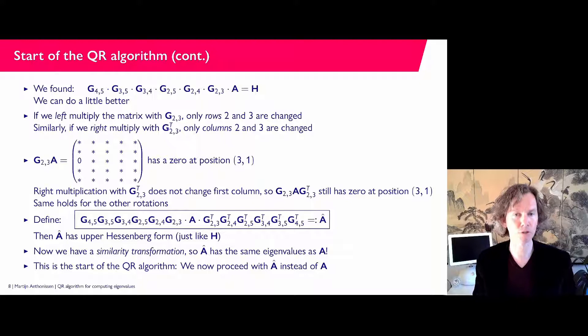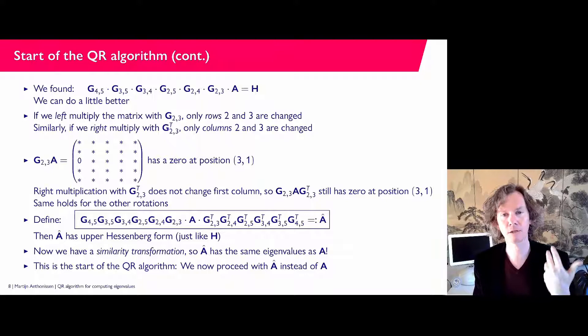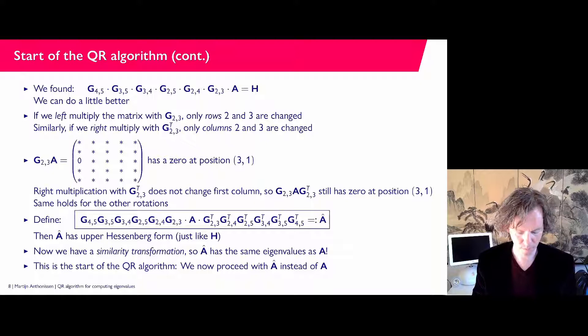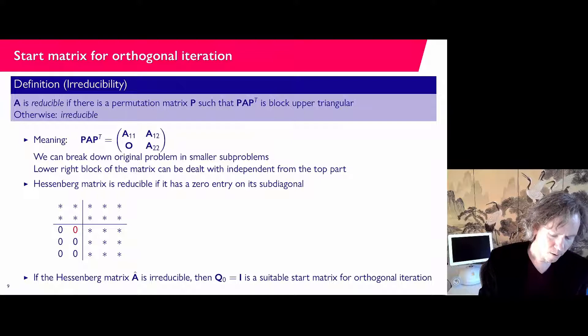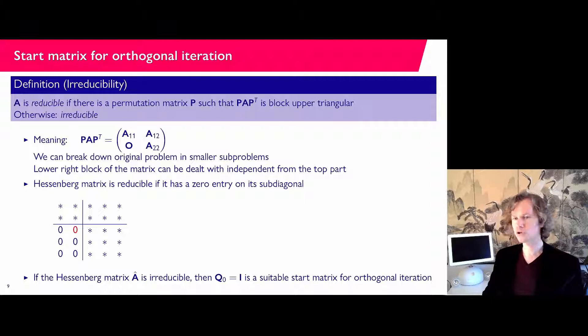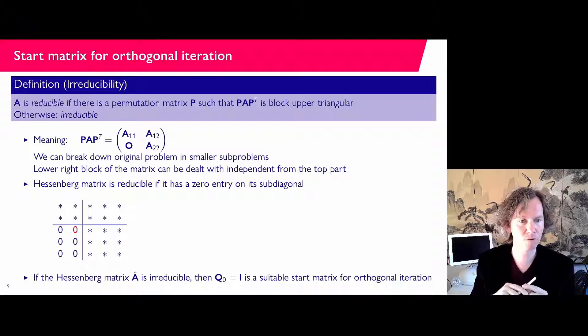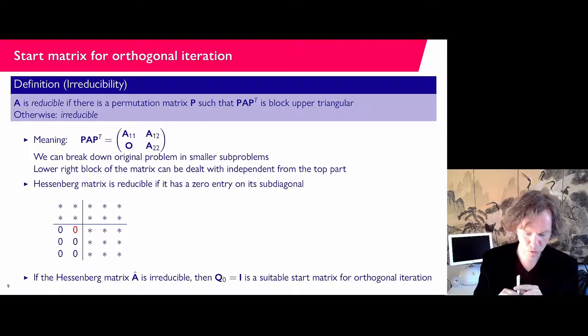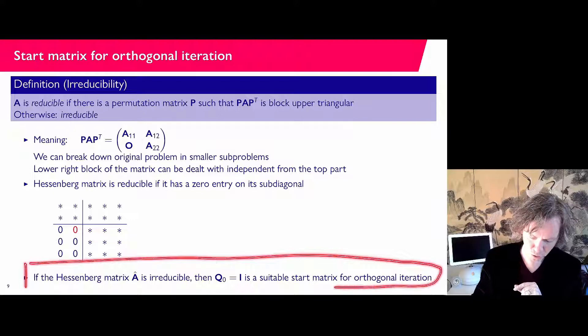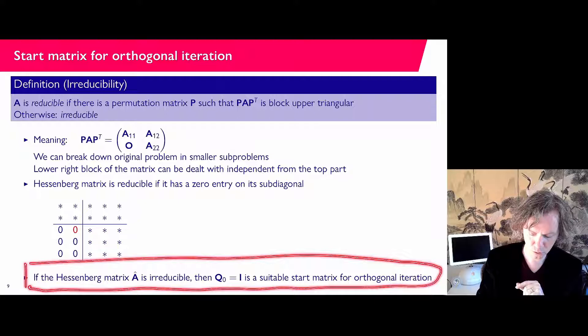We also need to pick a good starting matrix Q₀ that has components in all eigendirections. If the upper Hessenberg matrix Â is irreducible, then we can start the iteration with the identity matrix as Q₀ — that is the main message.